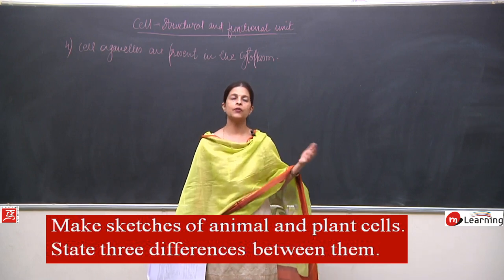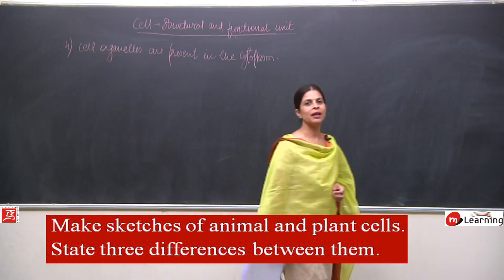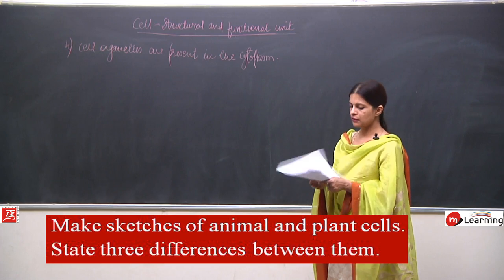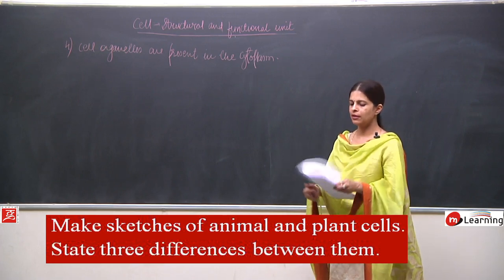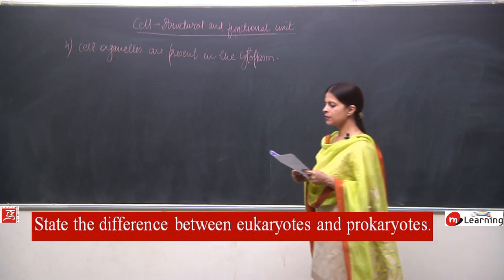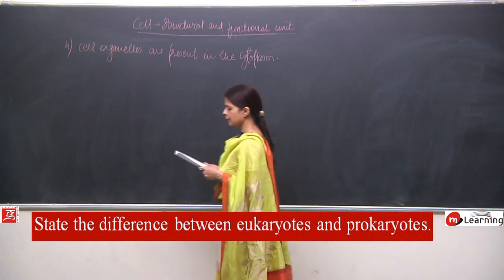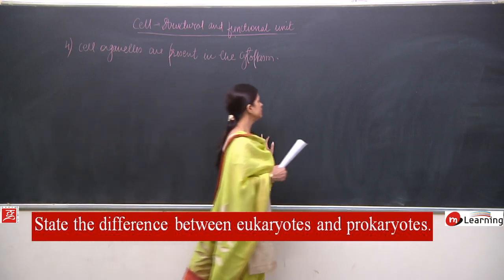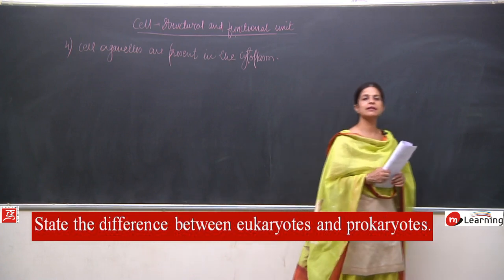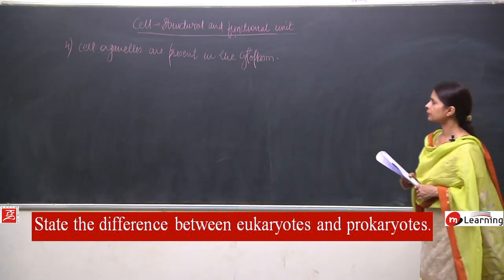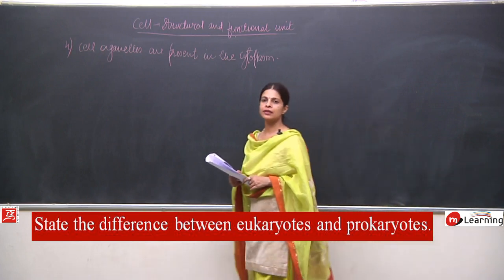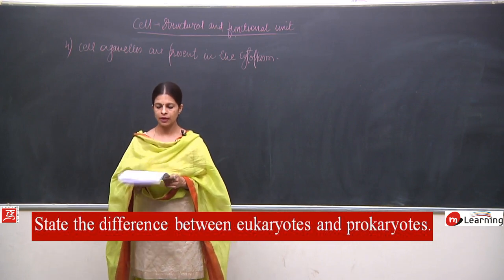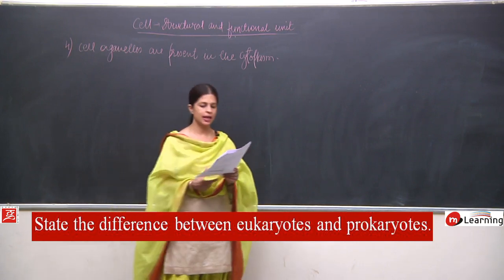We would not be writing this on the blackboard again as we have already discussed the same. Question 5 is omitted and now I will move to question number 6, which states the difference between eukaryotes and prokaryotes. We have already discussed the prokaryotic and eukaryotic cell differences and the structure and diagram of the prokaryotes, so I do not feel question 6 needs to be repeated either.